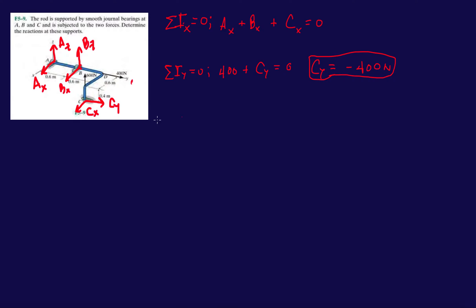That negative result tells us that CY, which we drew in the positive Y direction, is actually going the other way. You can leave it as negative or flip it and call it positive. Now in the Z direction, we have AZ plus BZ plus 600 newtons equals zero. That's it for the force equations.